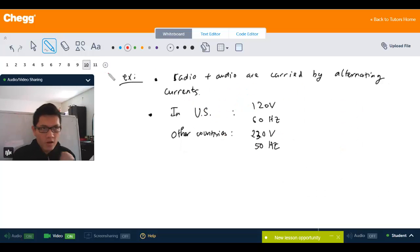So another example about AC current is that the radio and audio waves are also carried by the alternating current or AC current. And we know that in the US, the common voltage is 120 volts with 60 hertz. That means the current is reversing direction 60 times per second.